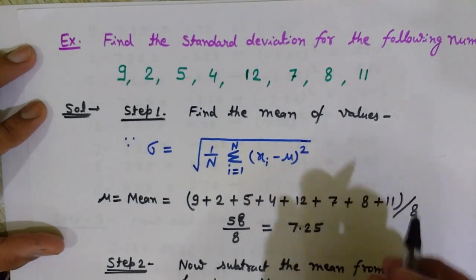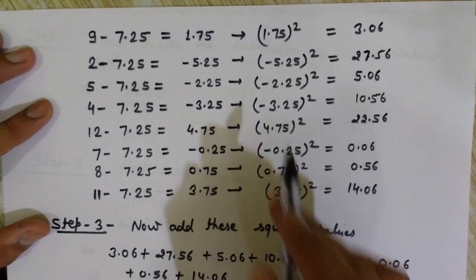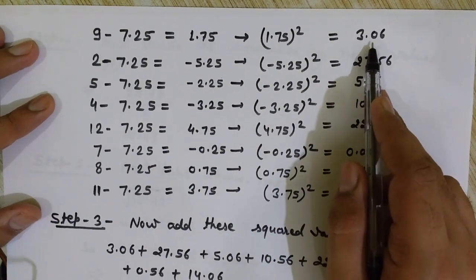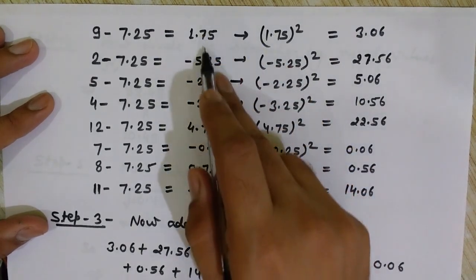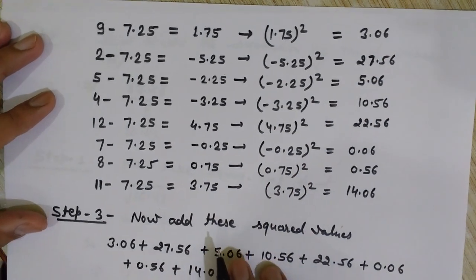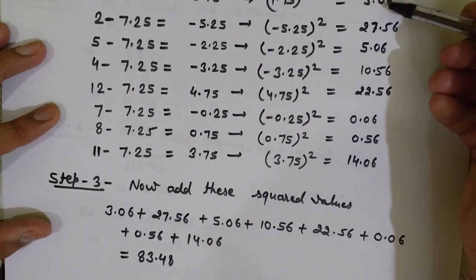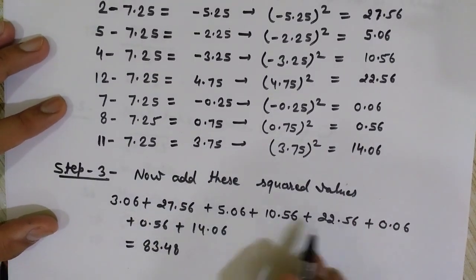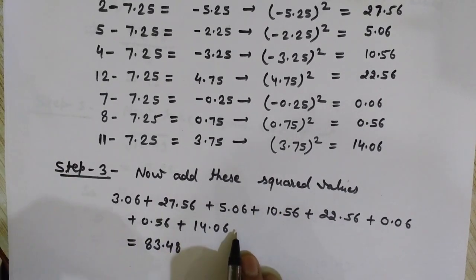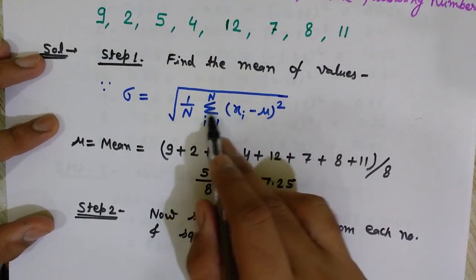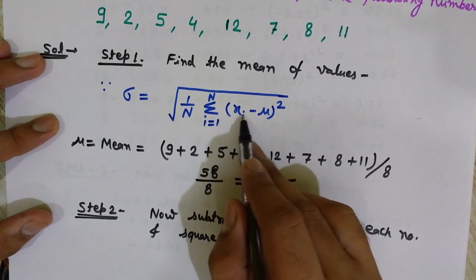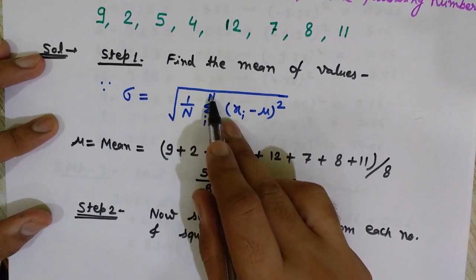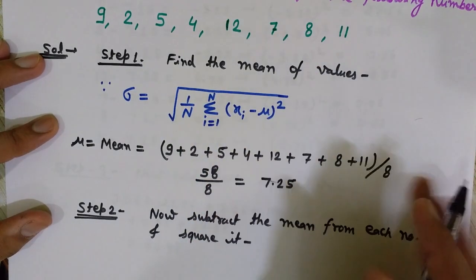Step three: we square all these differences. As per the formula, we square x1 minus mean, x2 minus mean, x3 minus mean, x4 minus mean, x5 minus mean, and so on. When we square a positive or negative number we always get a positive number, so these are simply the squares of all the differences. Now we add these squared values: 3.06 plus 27.56 plus 5.06, and so on — the summation of all squared differences for all 8 numbers.